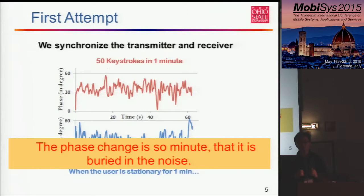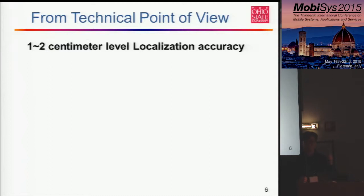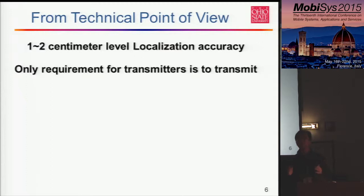At this point we can see the problem is really hard — the traditional way to find information from human motion is not possible here. From a technical point of view, if we want to track finger movement, we need one to two centimeter level localization accuracy in addition to human motion detection. It's not just about detecting that a finger moved — we need to know exactly where the finger is. In recent Wi-Fi localization work, the level of accuracy achievable is around 10 centimeters or more, which is not sufficient. Another challenge is that the transmitter will not cooperate with hacking — otherwise it's not hacking.